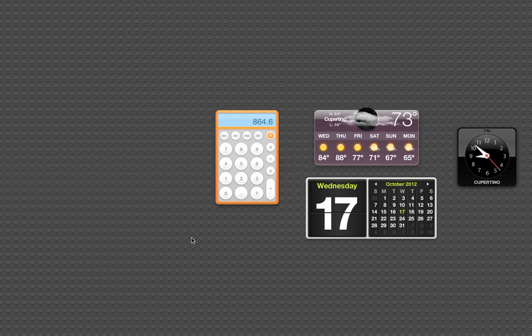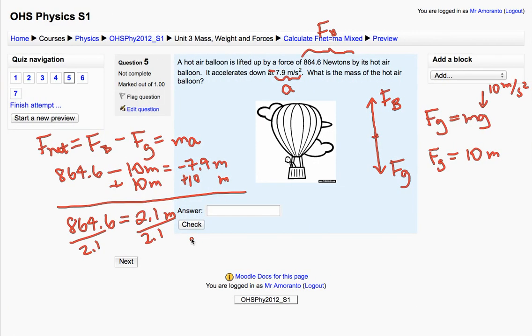Divided by 2.1 equals 411.7. So the mass is about 411.7. So mass equals 411.7 kilograms.